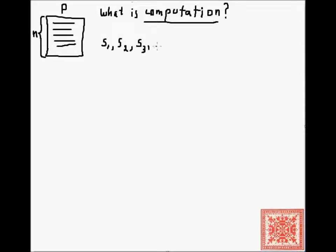These are instantaneous descriptions of program states — S1, S2, S3, and then Sk. So this is a finite sequence of snapshots.